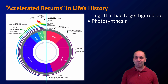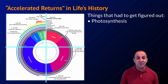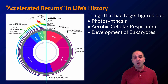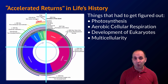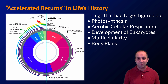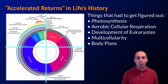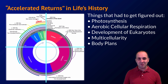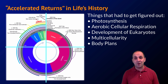Think about what had to evolve first. After the origin of life, you'd need the evolution of photosynthesis to oxygenate the environment, then the evolution of aerobic cellular respiration — the process used to generate ATP used by all multicellular life. We'd also need the development of eukaryotes, then the organization of cells into multicellular organisms, then the development of body plans. All of these things had to be figured out before the wide variety of multicellular life we see today could arise, explaining the accelerated rate of increasing diversity closer to present day.